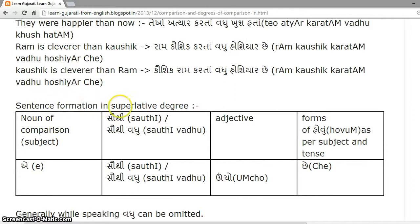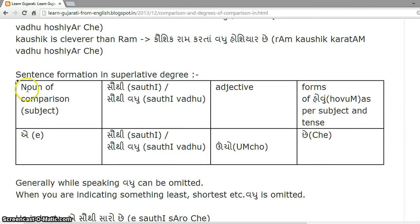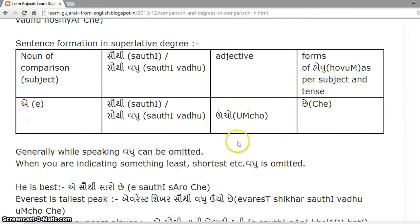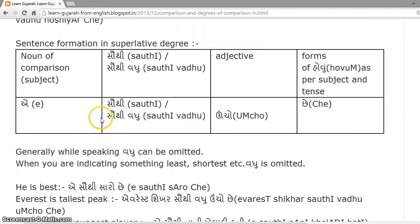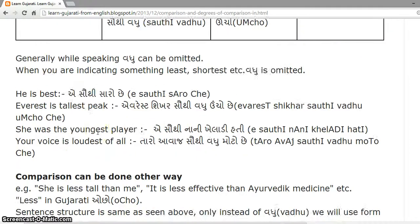Sentence formation in superlative degree is similar to what we have seen, so just notice the difference. It is: noun of comparison (i.e. subject), then 'sauthi' or 'sauthi vadhu', then the adjective, then the form of 'hovun' as per subject and tense. Generally while speaking, 'vadhu' can be omitted. The key difference here is that we do not use 'kartan'.